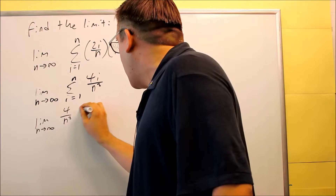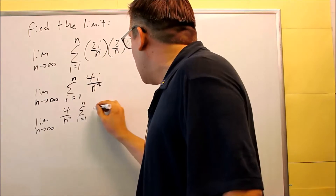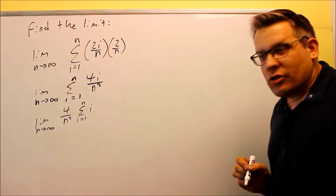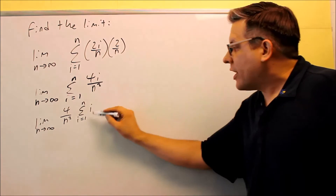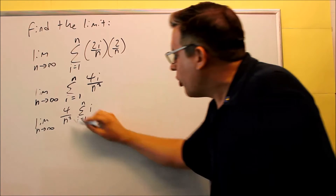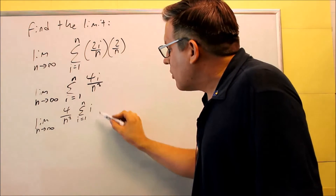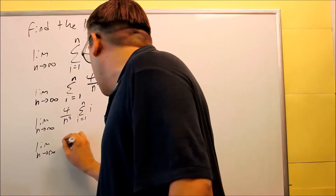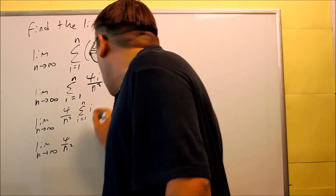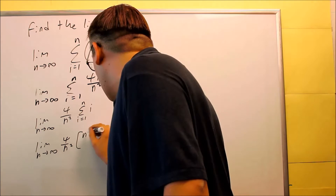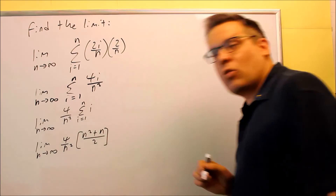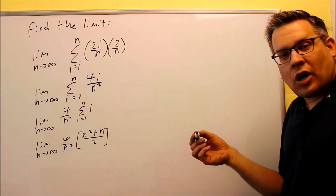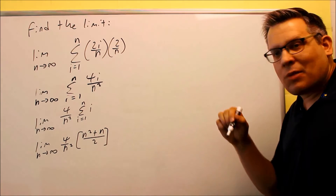It's better to pull all the n's to the outside and leave just the summation in terms of i. Once I have that, I'm ready to put in the formula. For the sum of i, I'll use the expanded version: n squared plus n over 2. Now, like with the other limit problems, multiply across the top and bottom, and then separate all the different terms. So I do a limit as n goes to infinity where I have 4n squared plus 4n on top and 2n squared on the bottom.